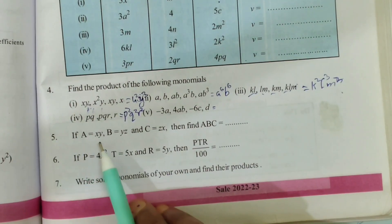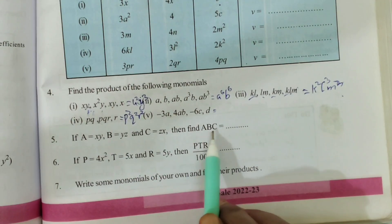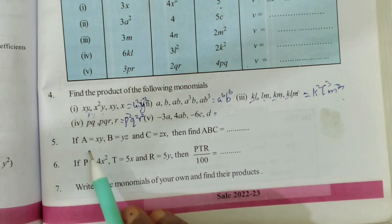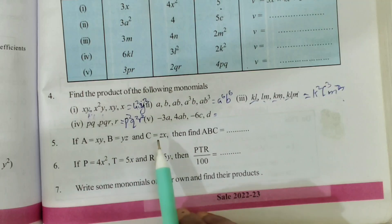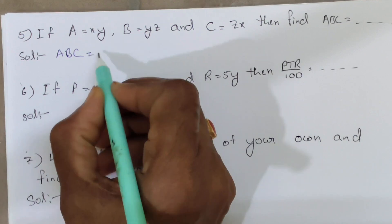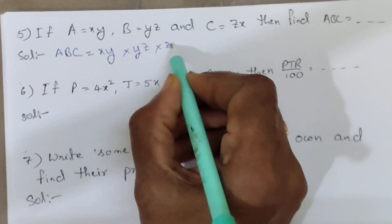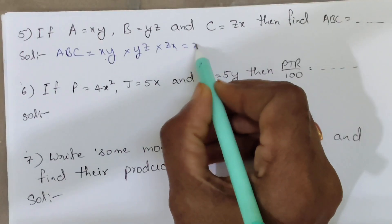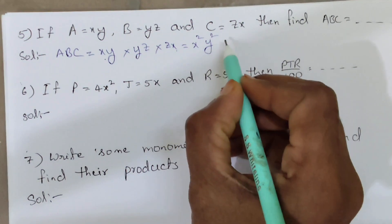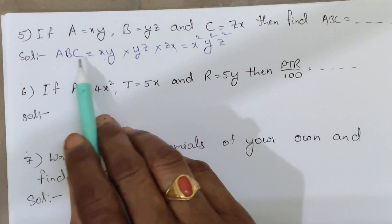Fifth question: if A equals xy, B equals yz, and C equals zx, then find ABC. ABC equals xy into yz into zx. Collecting x: two x's give x squared. Collecting y: two y's give y squared. Collecting z: two z's give z squared. So ABC equals x squared y squared z squared.